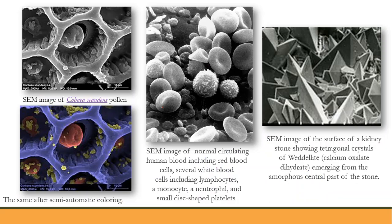The beautiful SEM images reveal a lot of detail. For example, a human blood cell — while it looks simple to the naked eye — shows different elements: white cells, lymphocytes, monocytes, neutrophils, and small disc-shaped platelets. Kidney stones also have distinct SEM images. The pollen grain image is 3D but black and white; nowadays there are possibilities to colorize these images automatically, which helps easily identify different elements.